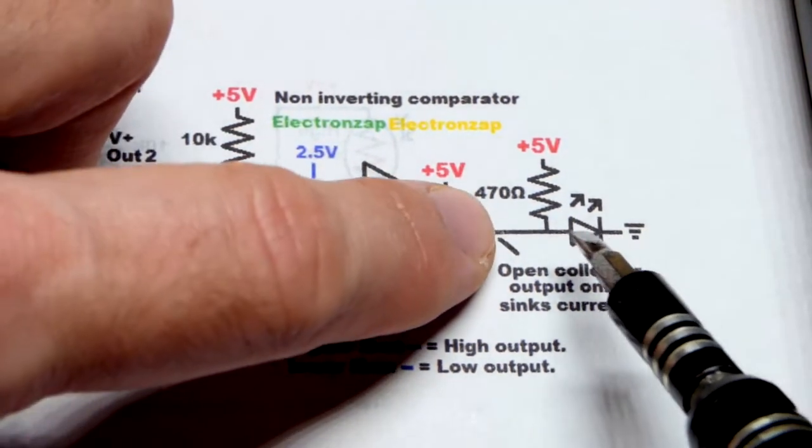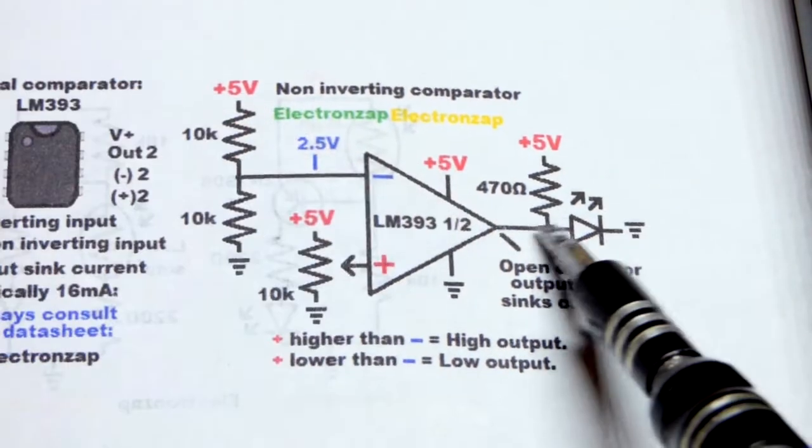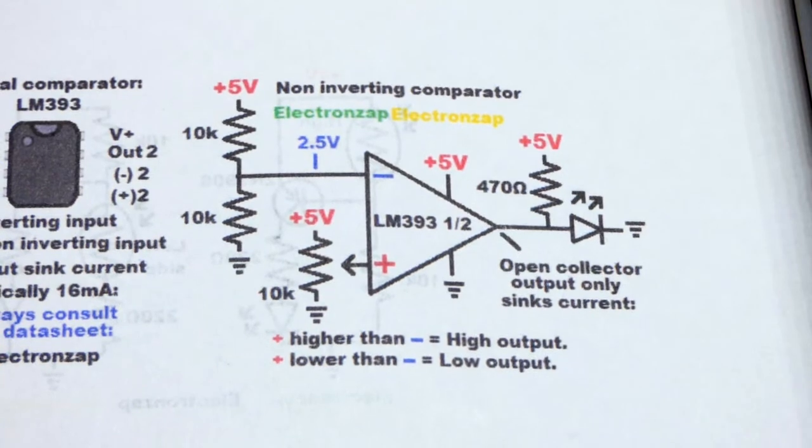When the integrated circuit is high, basically it doesn't exist as far as that resistor and LED are concerned. And then when it's low, it connects directly to ground.